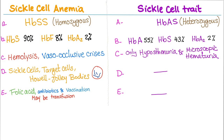Let's say hemoglobin is 100% but you have different types. In sickle cell anemia you have 90% hemoglobin S, 8% hemoglobin F, 2% hemoglobin A2, and virtually no hemoglobin A — no normal hemoglobin. Sickle cell trait on the other hand has 55% hemoglobin A, 43% hemoglobin S, and 2% hemoglobin A2.